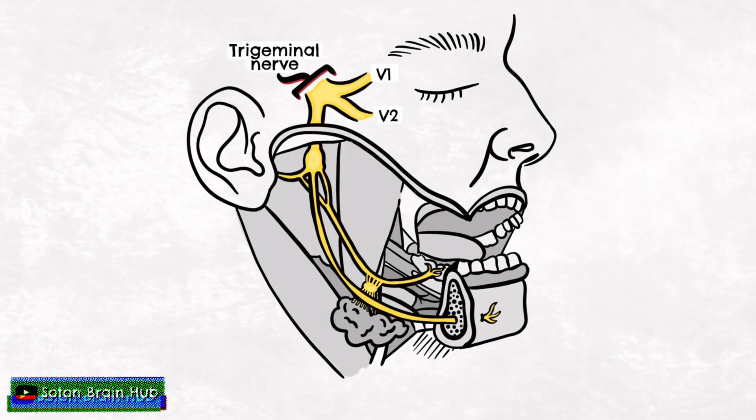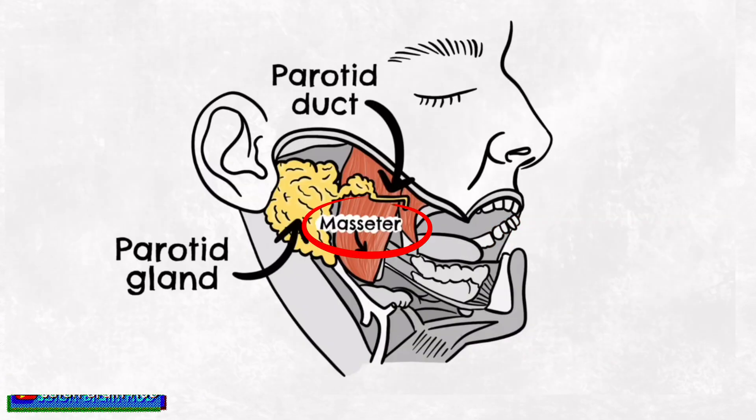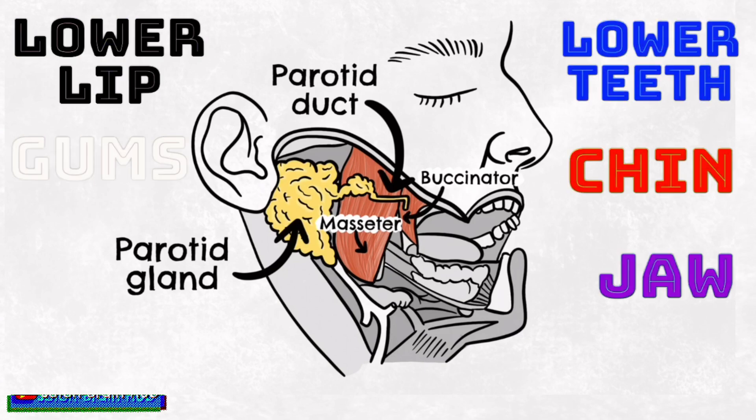The mandibular nerve is both sensory and motor, controlling the muscles of mastication, namely the temporalis and masseter. It carries sensory information from the lower part of the face including the lower lip, lower teeth, gums, the chin and jaw.